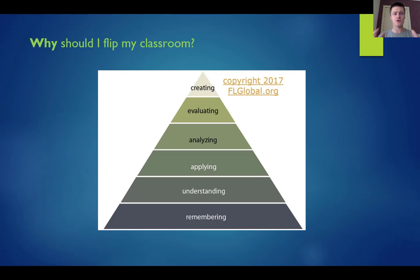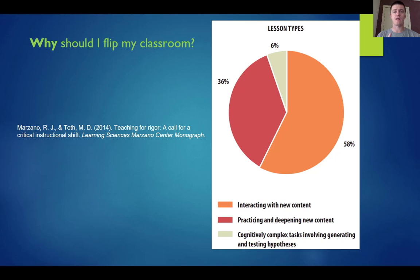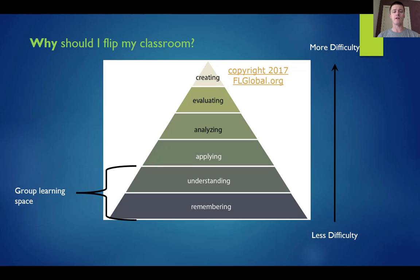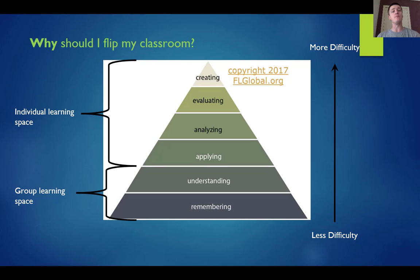Let's talk about the pedagogy. I'm sure we're all familiar with Bloom's taxonomy and the way that we should be spending as much time as possible towards the top of the pyramid, as opposed to down the bottom. The unfortunate thing is that research looking at over two million classrooms found that 58% of those classes and lessons were actually focused on interacting with new content, which is the bottom two levels. We're told we should be at the top, but in reality we're down the bottom. So what this means is that the group learning space is spent on understanding and remembering — less difficulty — while the individual learning space is spent on applying, analysing, evaluating, and creating, where there's more difficulty.